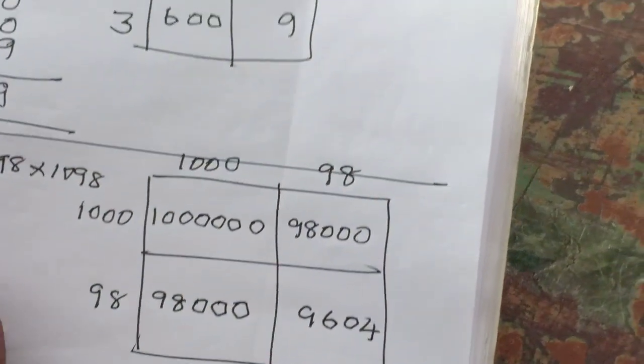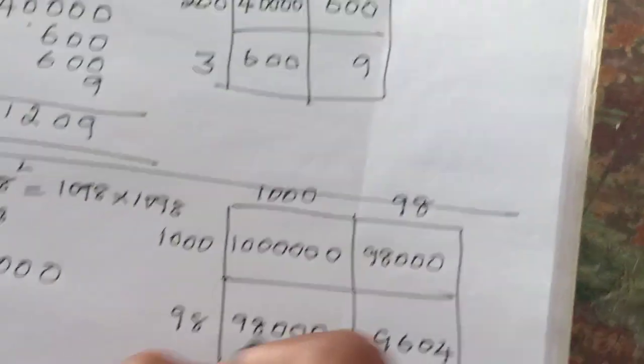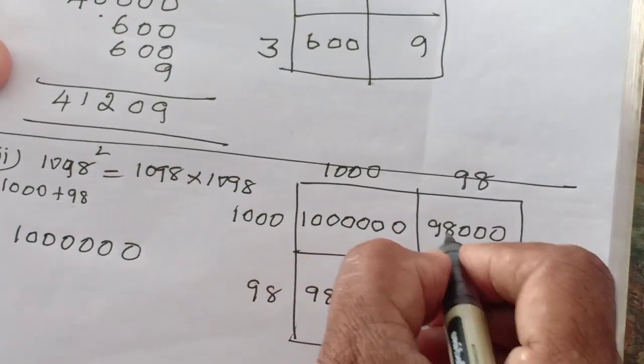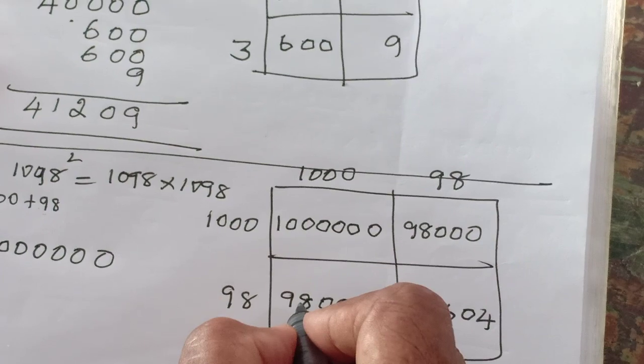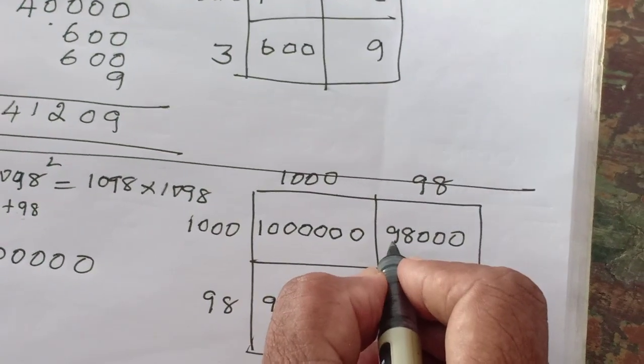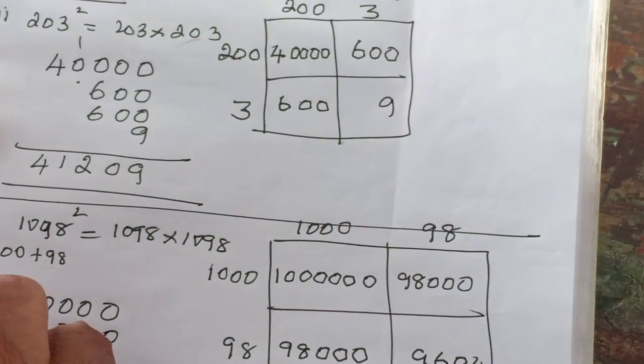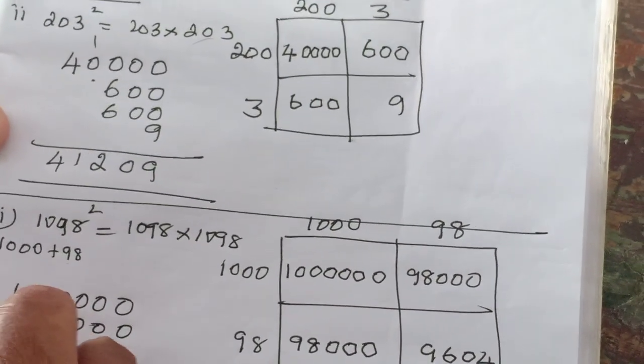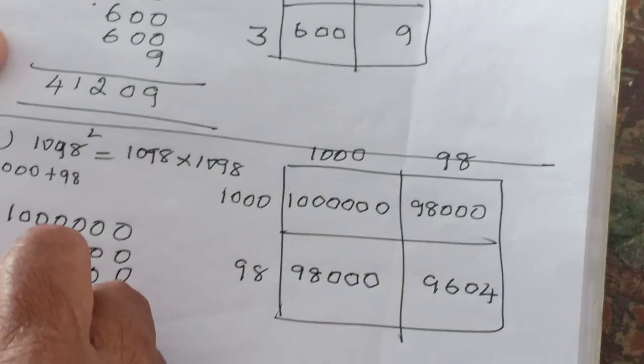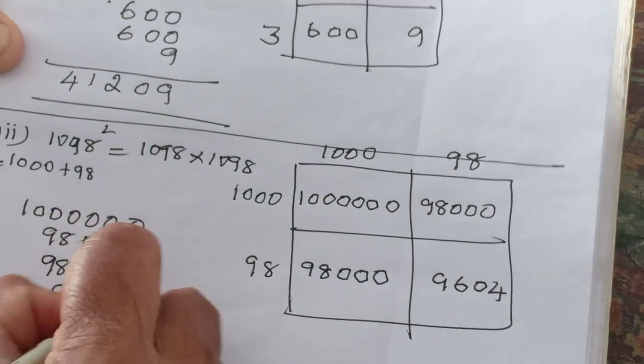So 1, 3, 4, 5, 6. 98,000, 98,000. If you want to add it also, you can add it. 98 plus 98, 196. Otherwise you do it like this. 1, 2, 3. Here, next, 98. Next one is 9604.